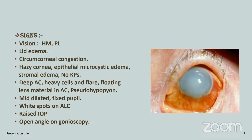Signs: vision is impaired to hand motion or perception of light in hypermature and mature cataract. There is lid edema, circumcorneal congestion, corneal microcystic edema, no KPs. There is a deep AC with heavy cells and flare. Lens material in the AC and pseudo-hypopyon due to lens material are seen. Mid-dilated or fixed pupil and white spots on the anterior lens capsule. Wrinkles may also be seen on the anterior lens capsule due to loss of cortex. Raised IOP and open angle on gonioscopy.